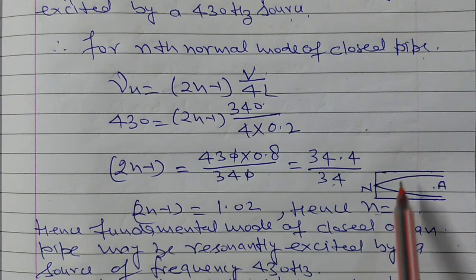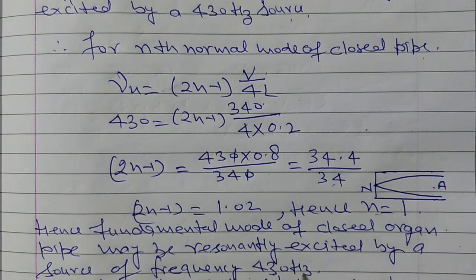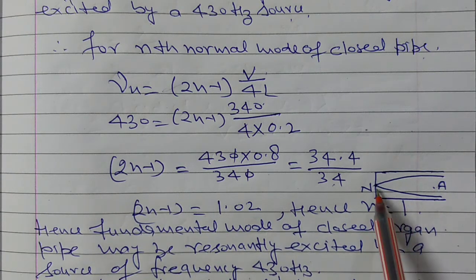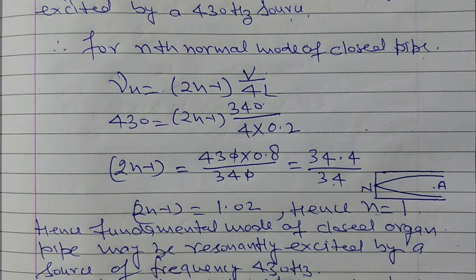Hence n=1, that is first normal mode of vibration of closed organ pipe, and the first normal mode of vibration resonantly excited by the source of frequency 430 hertz. First normal mode means fundamental mode is resonant with 430 hertz.